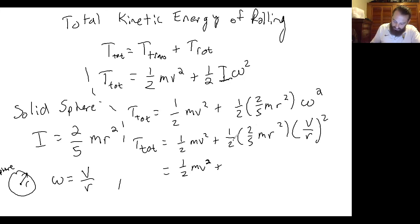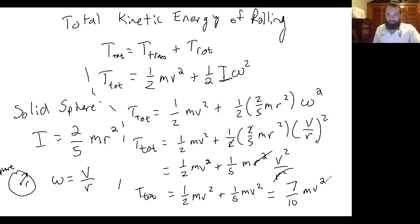So I'm going to start canceling some stuff. This two cancels with that two, so we're left with one fifth mr squared, and then v squared over r squared. But these r squareds cancel, and you're left with one half mv squared plus one fifth mv squared. And so then you can combine those two fractions. One half would be five tenths and one fifth would be two tenths, so that would be seven over ten mv squared for the total kinetic energy of this rolling ball.